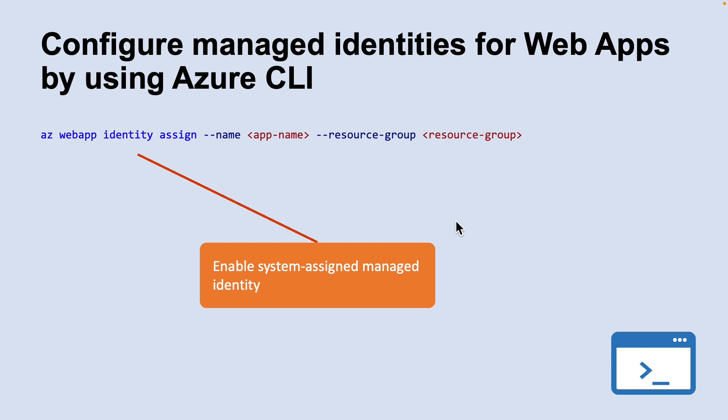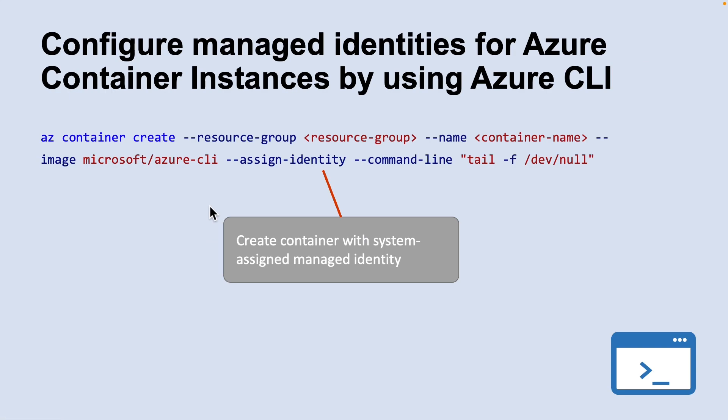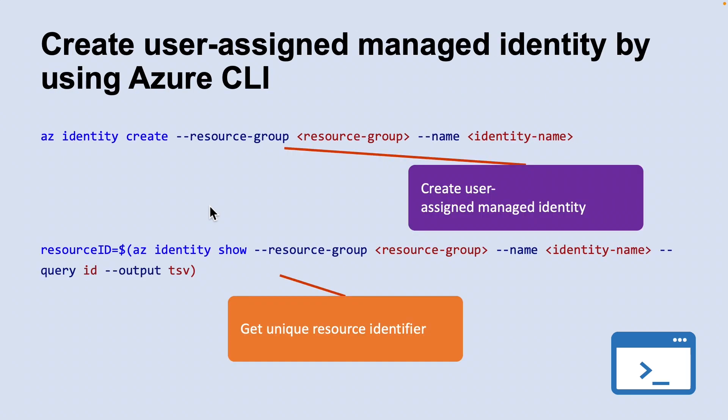First, create a web application using Azure CLI. Next, run the identity assign command to create the identity for this application. When creating a container instance using Azure CLI, you can specify whether to create a system assigned managed identity along with the resource. Alternatively, a container created using Azure CLI can use a user assigned managed identity that was created ahead of time.